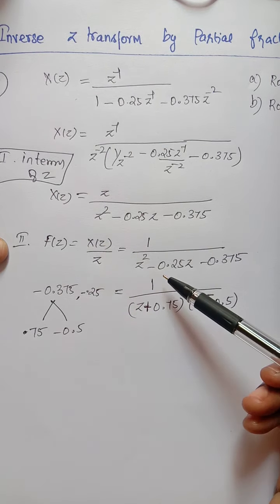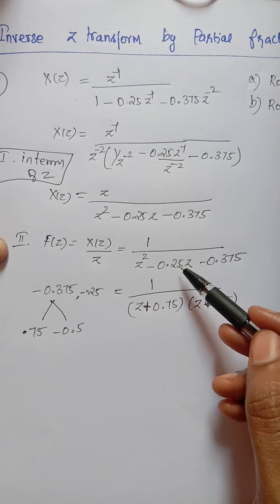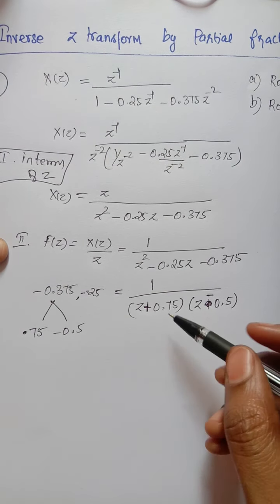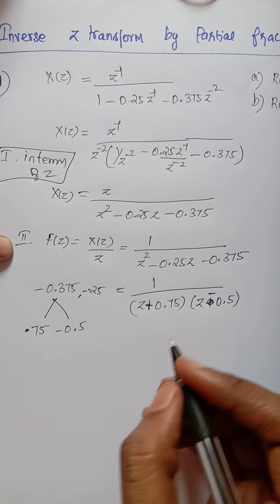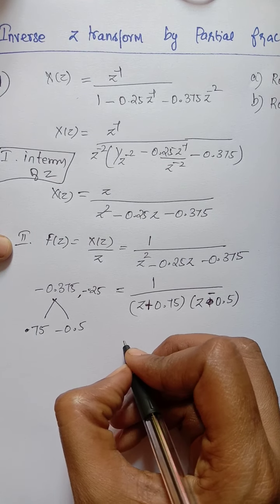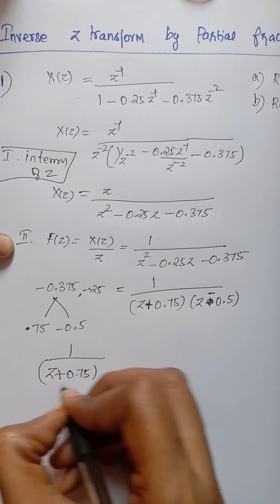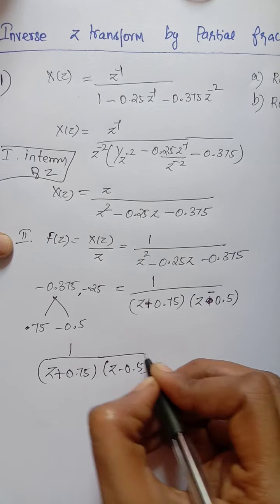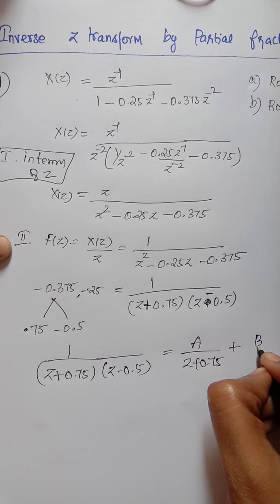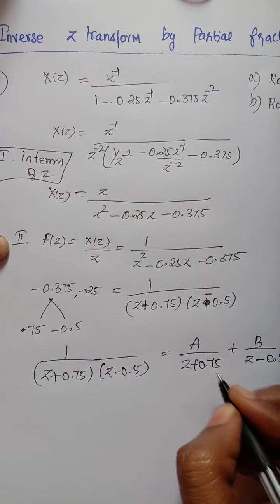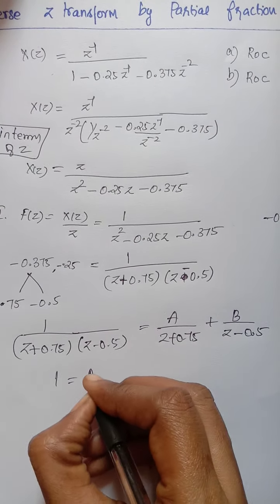The second step is to find the function X(z)/z. We factor the quadratic in the denominator, getting (z + 0.75)(z − 0.5). Now we apply partial fractions: 1 divided by (z + 0.75)(z − 0.5) equals A divided by (z + 0.75) plus B divided by (z − 0.5).